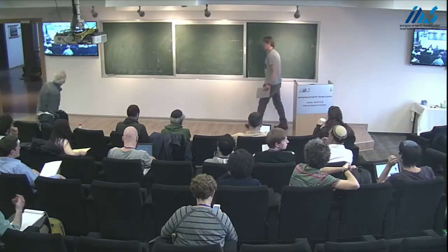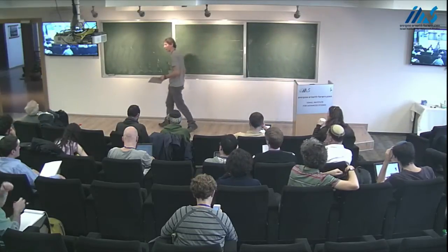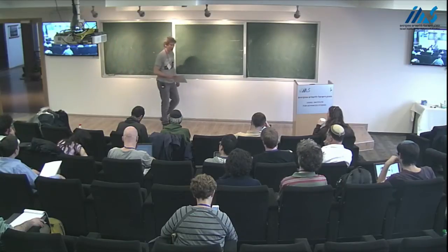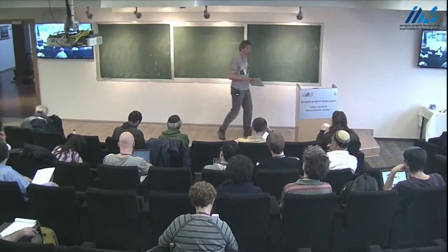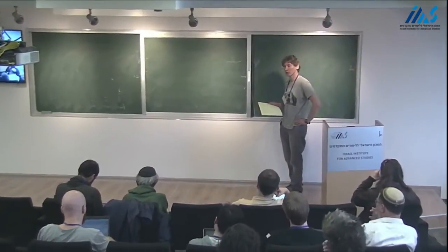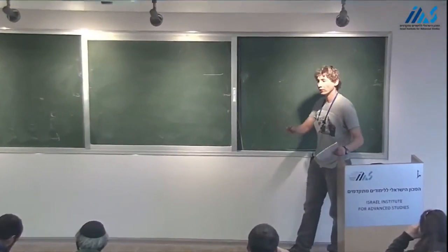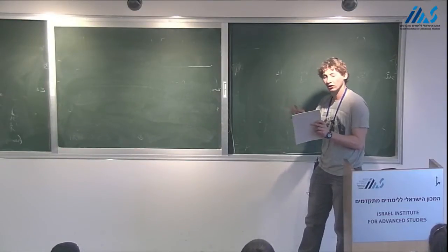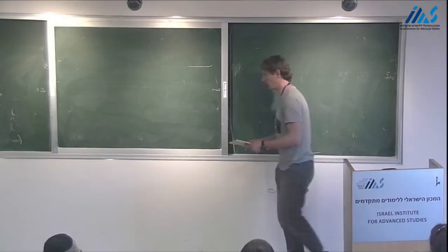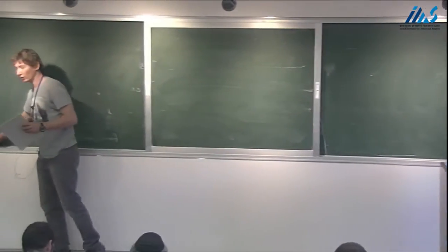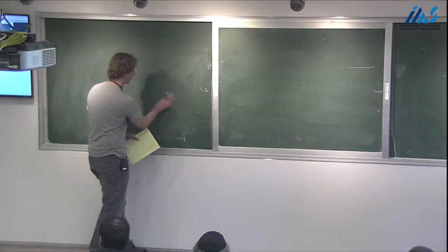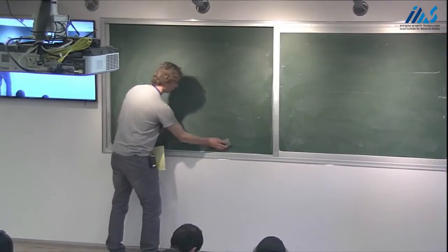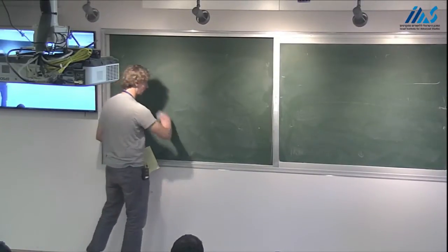Let me remind you that last time we talked about the Grassmannian and about the positive part of the Grassmannian. We mentioned three different ways to subdivide the Grassmannian into smaller pieces: the Schubert decomposition, the Matroid decomposition, and the Positroid decomposition that sits between them. And I mentioned at the end of the lecture that there is a symmetry — for the Positroid decomposition, for the positive part of the Grassmannian, there is a cyclic symmetry.